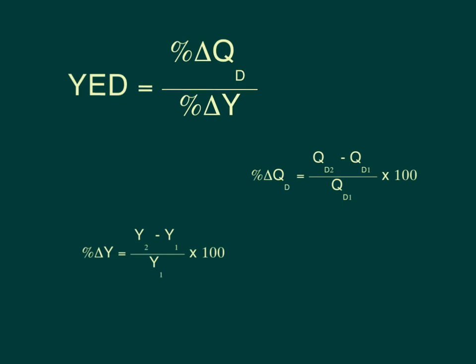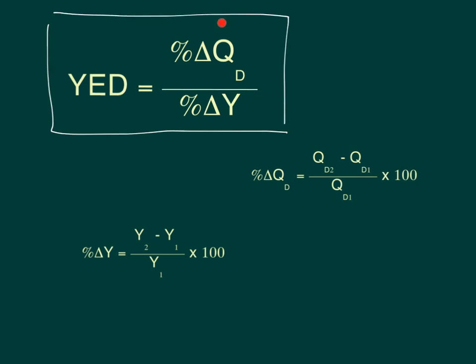How do we measure income elasticity of demand? We use this formula. YED, which is the symbol for income elasticity of demand, is equal to percentage change in the quantity demanded over percentage change in income. The top part of this equation we measure as: QD2 minus QD1, divided by QD1, times 100. The bottom part is the percentage change in income: Y2 minus Y1, divided by Y1, times 100.